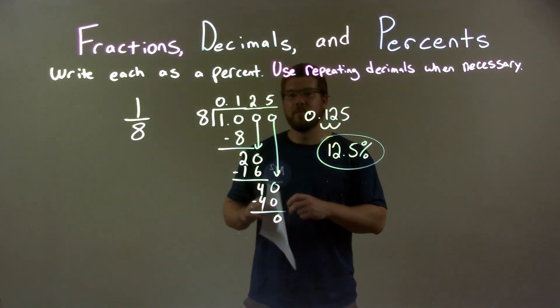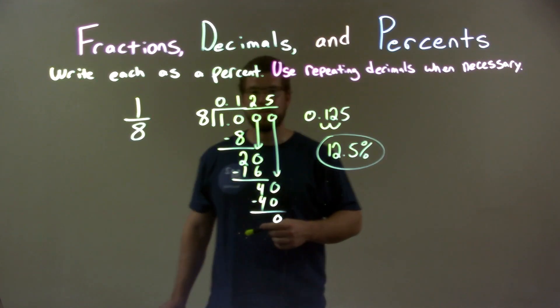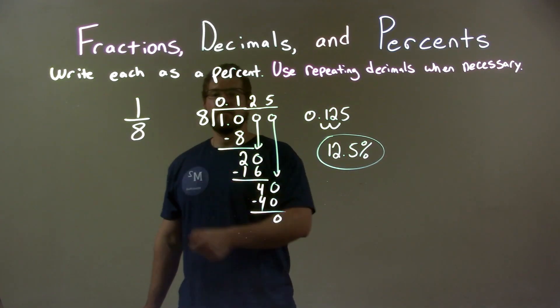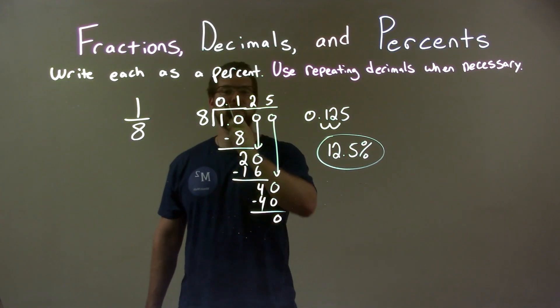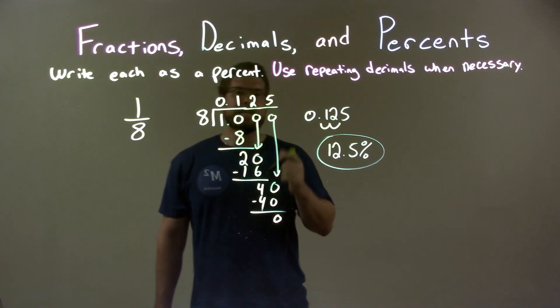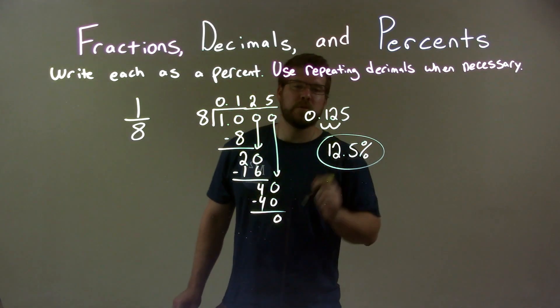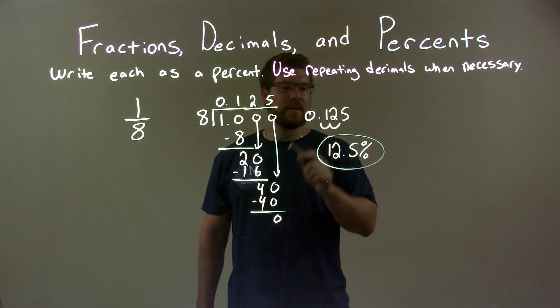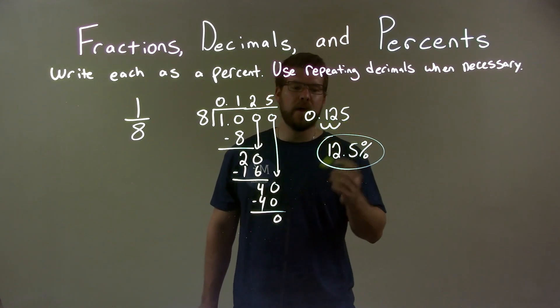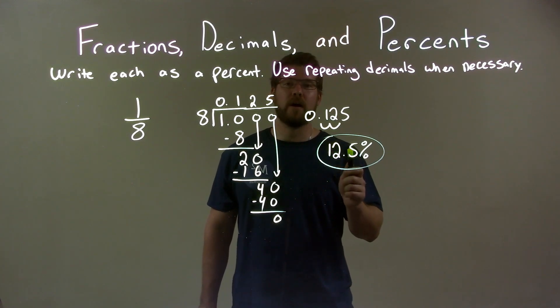So quick recap: we're given one-eighth and we need to write that as a percent. The first thing I do is long division of 8 into 1, and that gives me 0.125. Then I convert 0.125 into a percent by moving the decimal place two spots to the right, and that gives me my final answer of 12.5%.